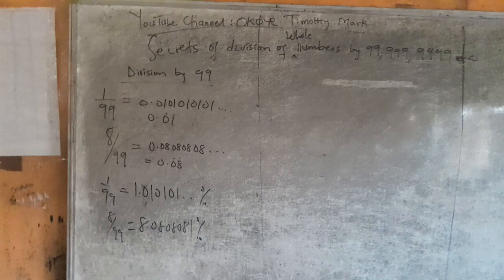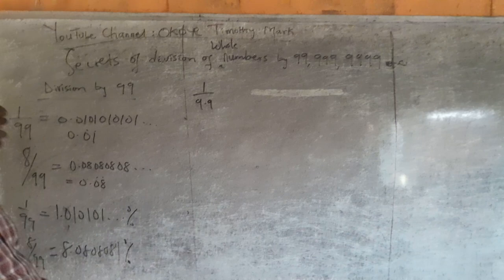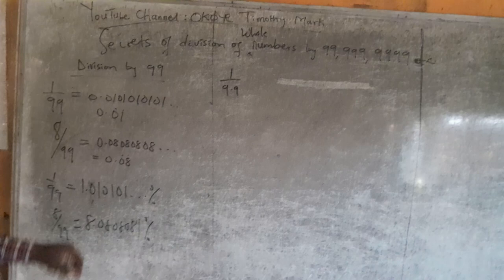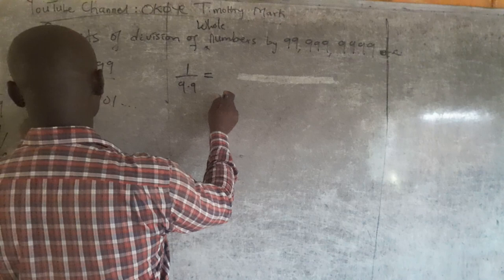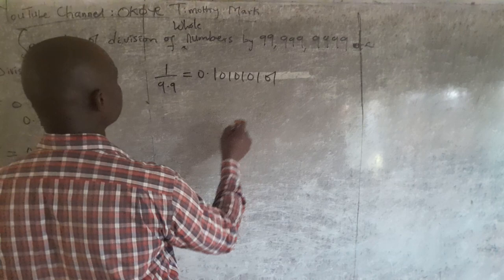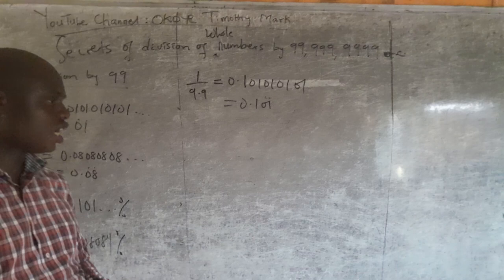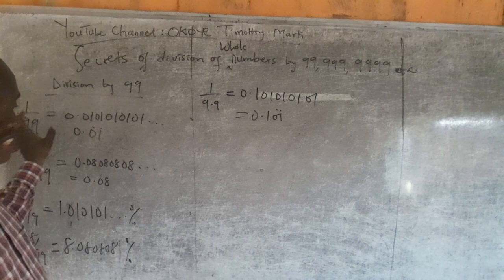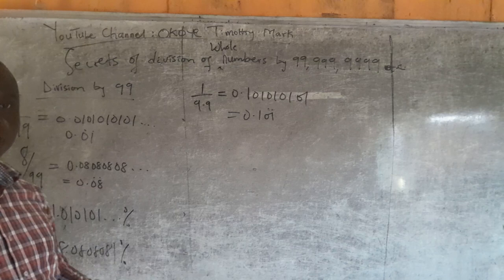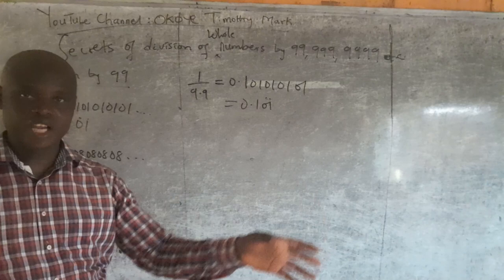So let me note that 1 over 99 is 0.01. If you give me 1 over 9.9, note that 9.9 is 1/10 of 99. So I will simply multiply the answer by 10. So 1 over 9.9 gives me 0.101010..., which is written as 0.101 with the 01 repeating indefinitely.